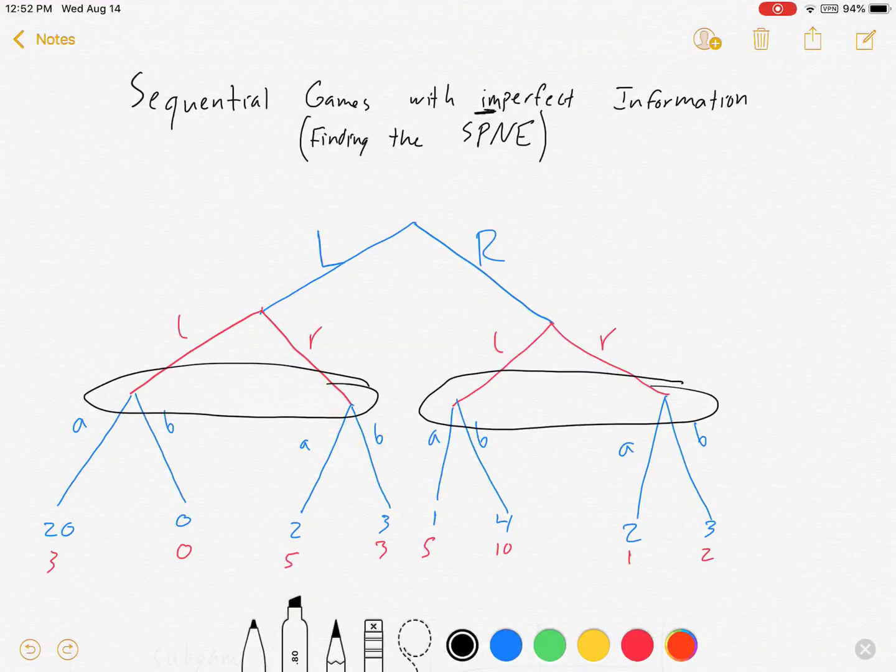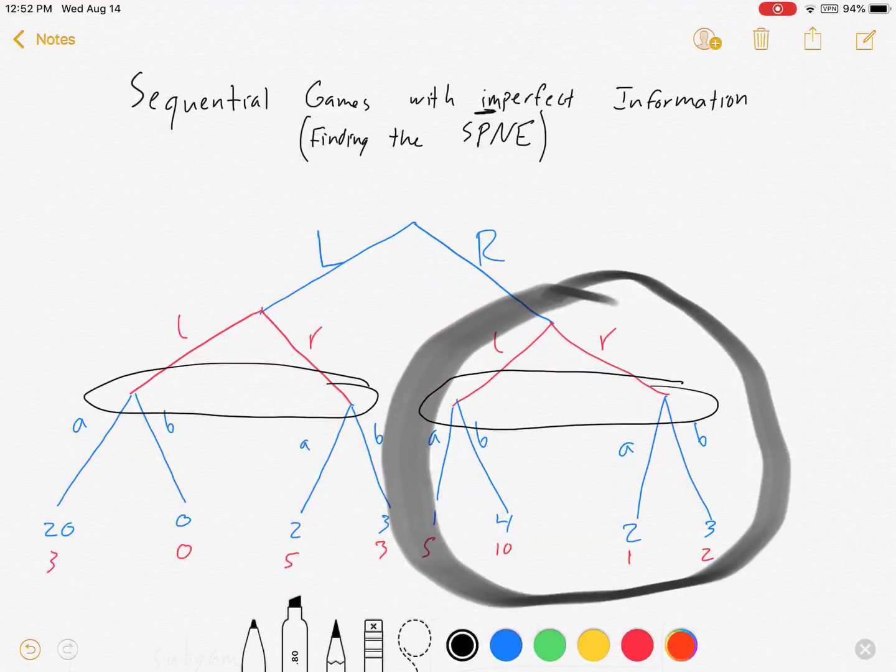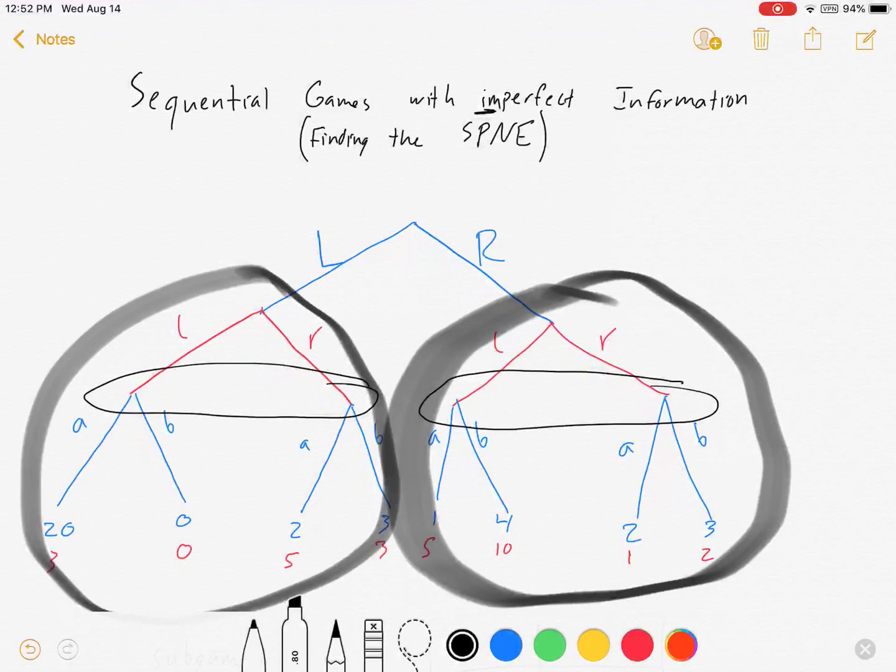So when solving this, when we see a sub game like this, we're going to convert that to a simultaneous game. And so both of these sub trees are going to have to get converted in order to solve this.